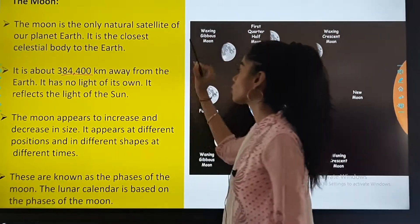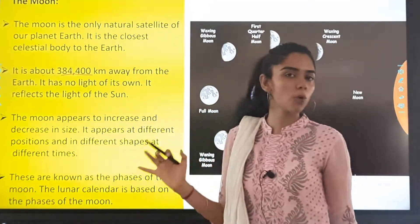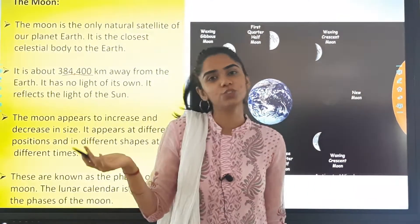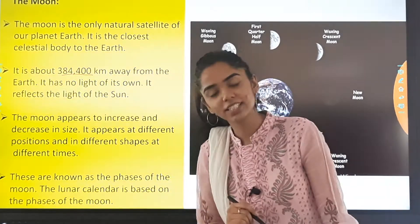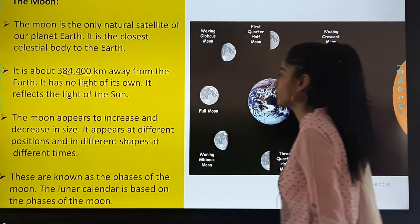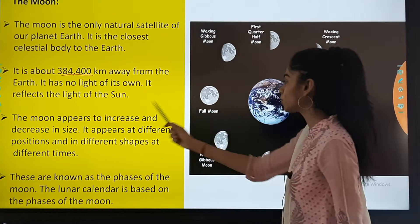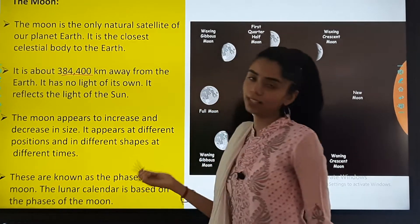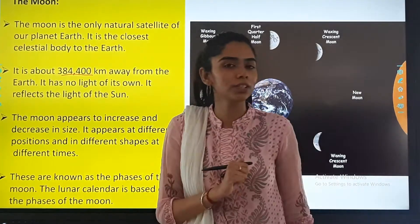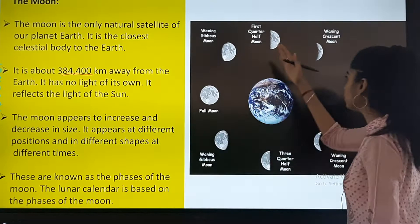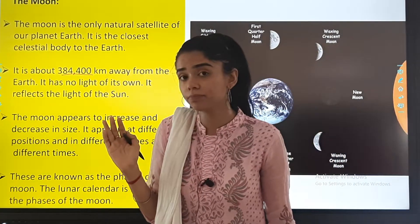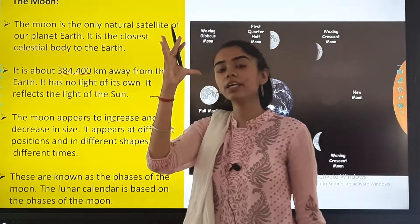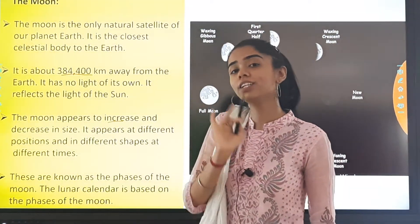The moon has no light of its own. It reflects the light of the sun. The moon appears to increase and decrease in size, appearing at different positions and in different shapes at different times. You might have noticed during the night time that the moon keeps on changing its position and even its size.